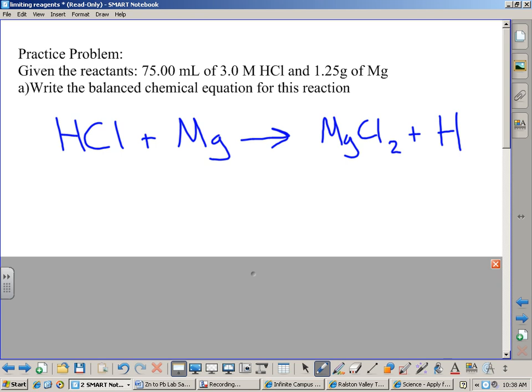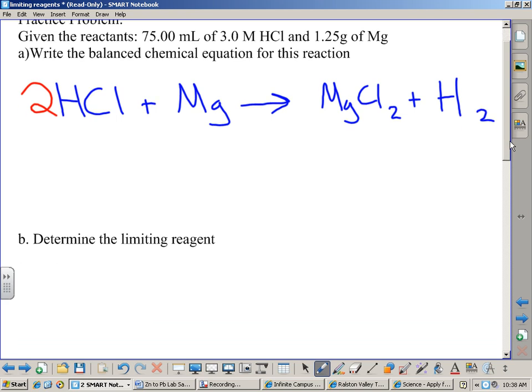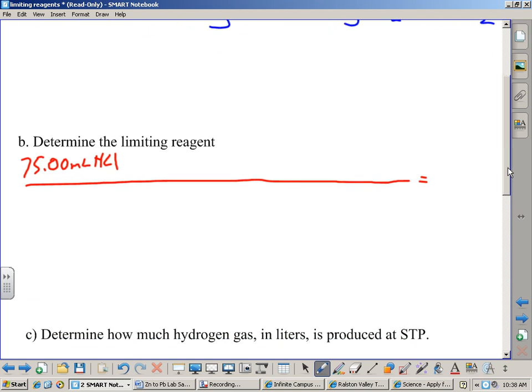Then, the last thing, hydrogen. When it's by itself, it's what? Diatomic. Two of them. To get that to balance, we need to go ahead and put a coefficient of 2 out front there. Questions? All right. So, second question says, determine the limiting reagent. We've got two amounts of reactants that we're starting with, so we're going to have two problems. 75.00 milliliters of HCl and the 1.25 grams of magnesium.